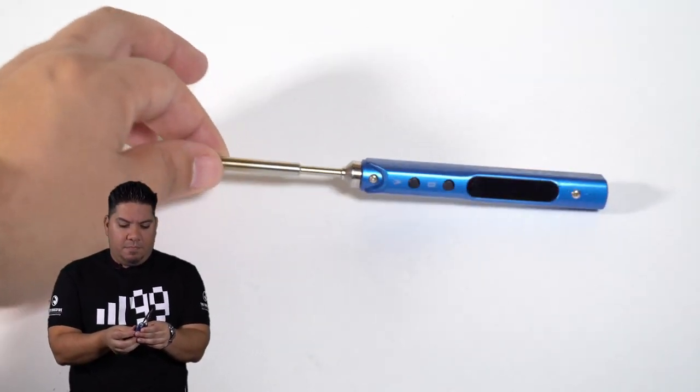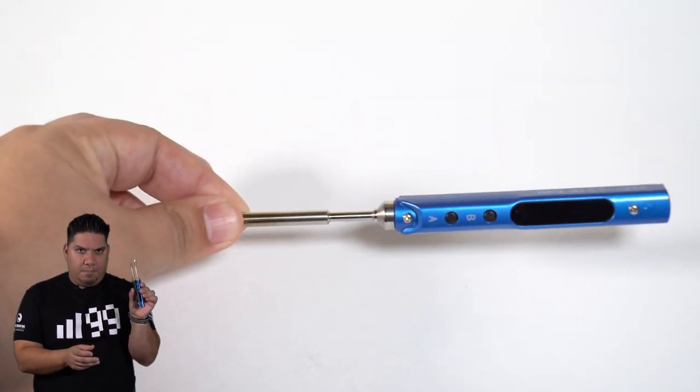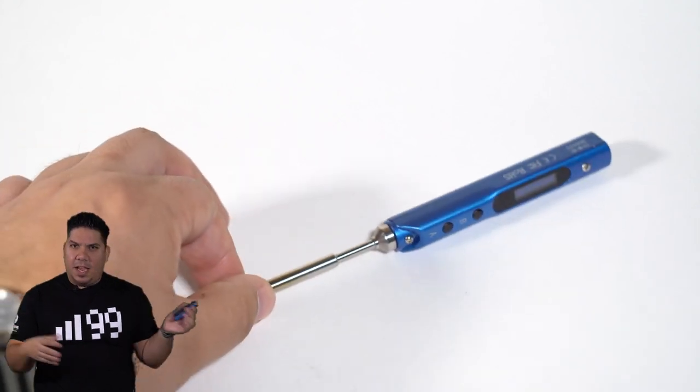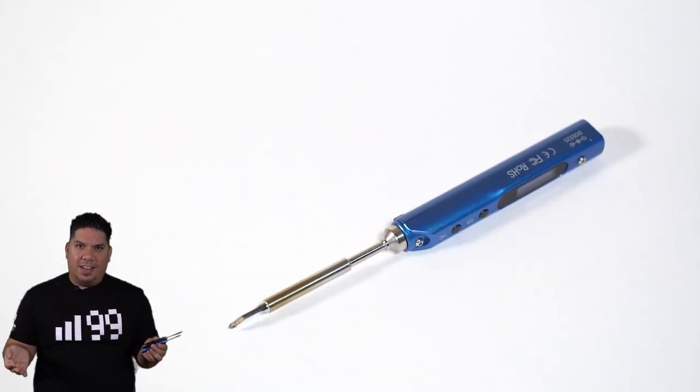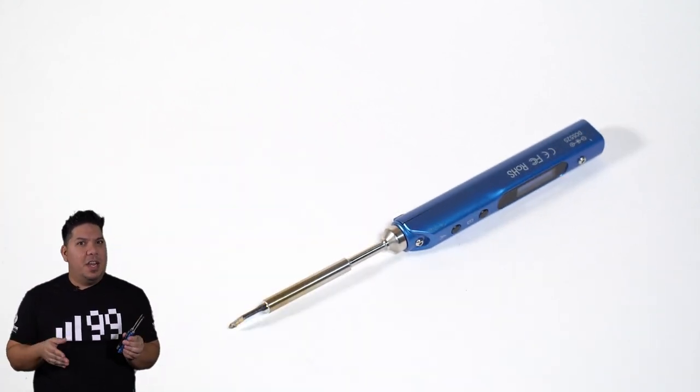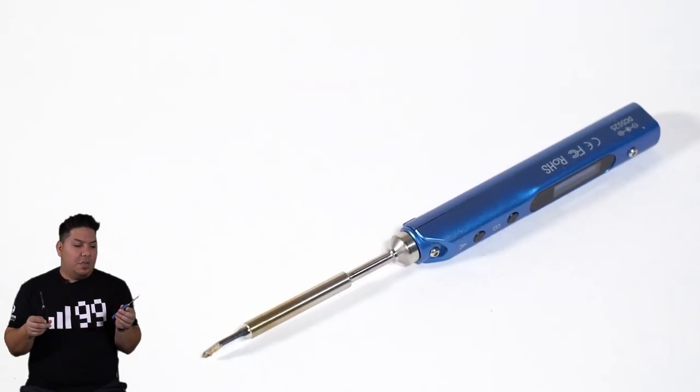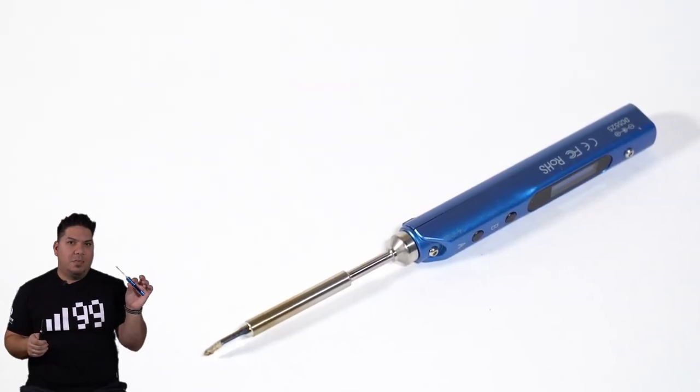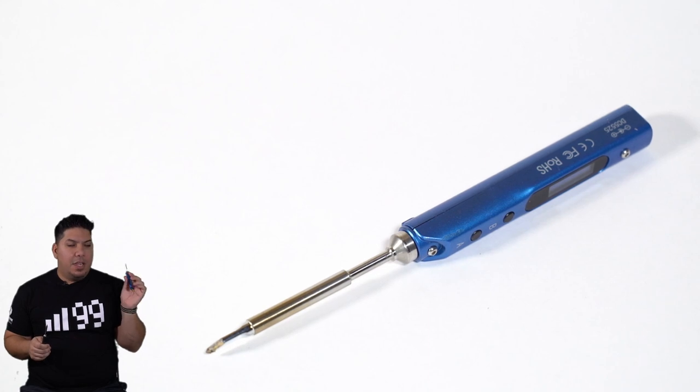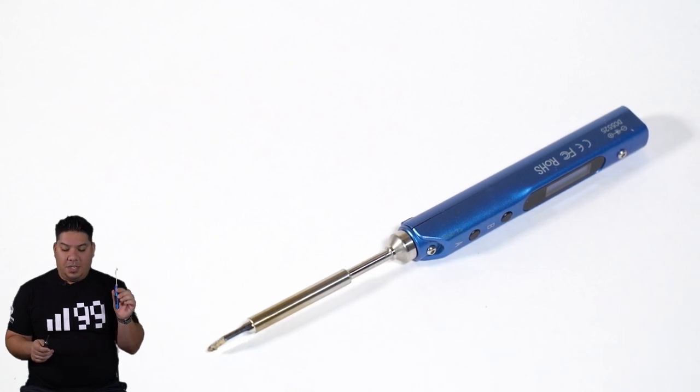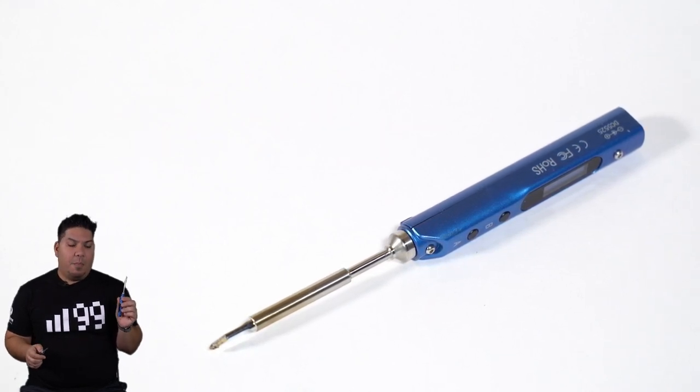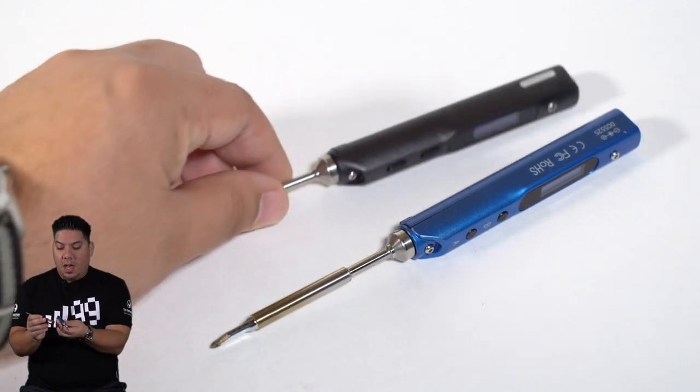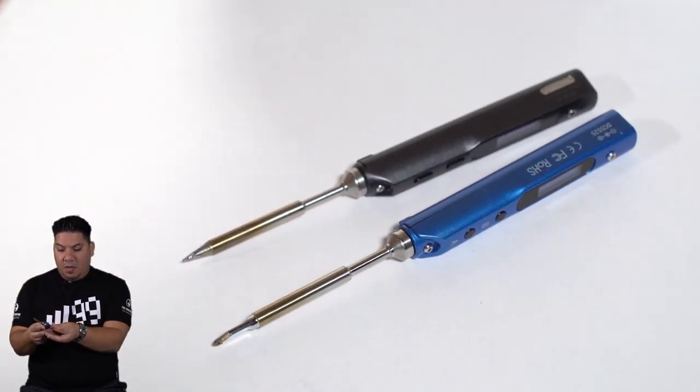While in a lot of respects this is just a TS 100 rebrand, there are a couple of very notable differences that make this a worthwhile purchase. As you can see, the screen is identical, the casing is pretty much the same—this is a blue version.